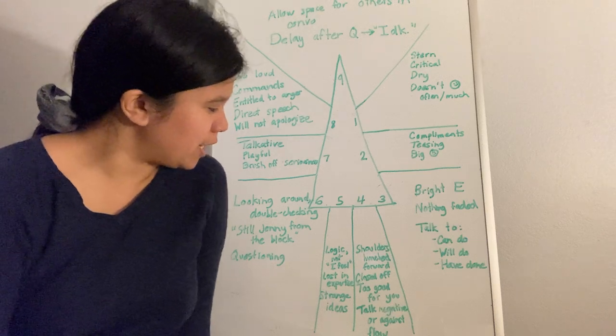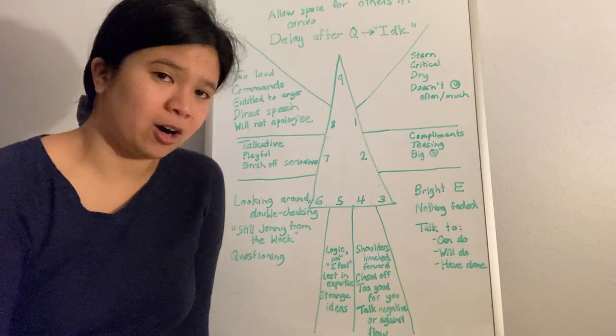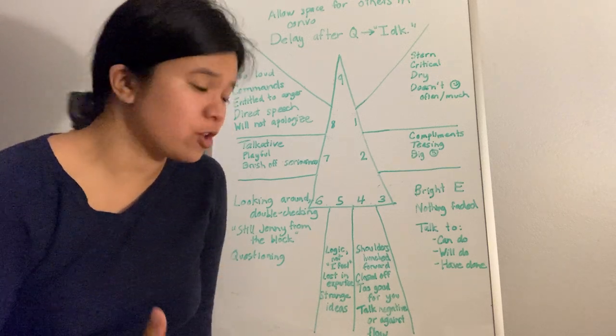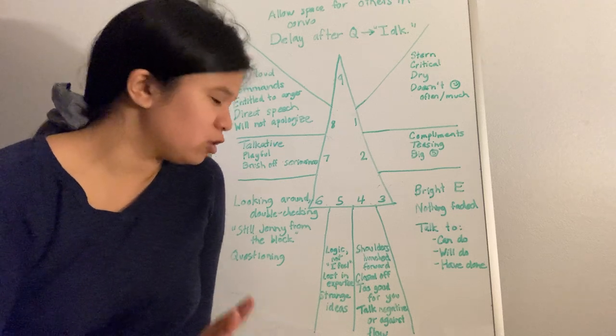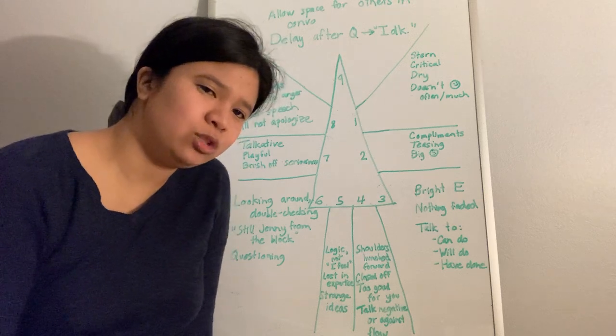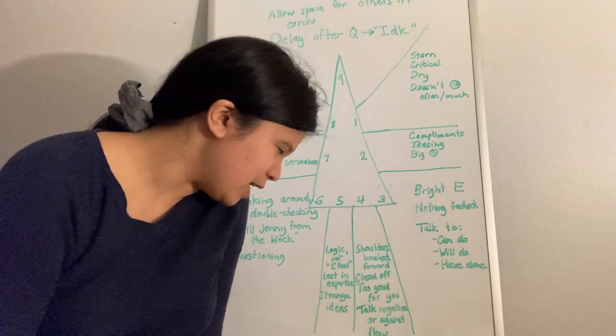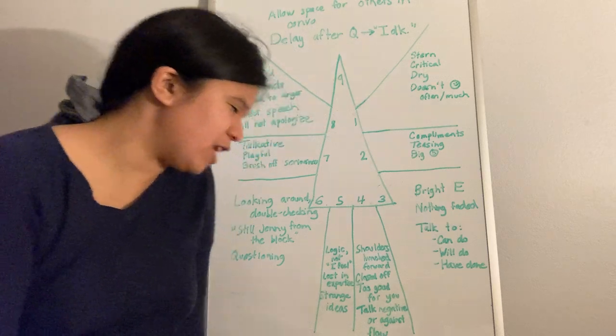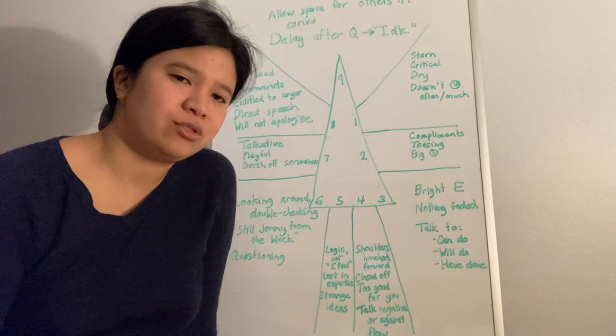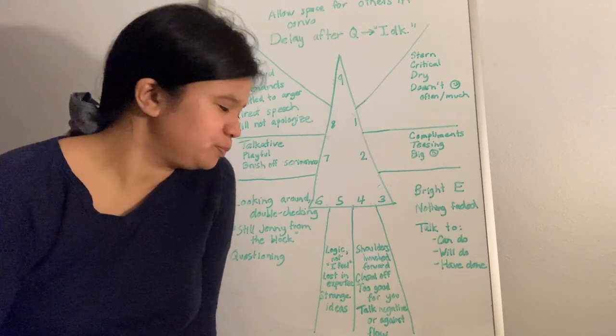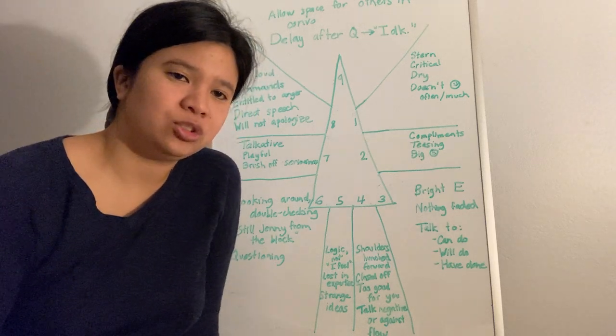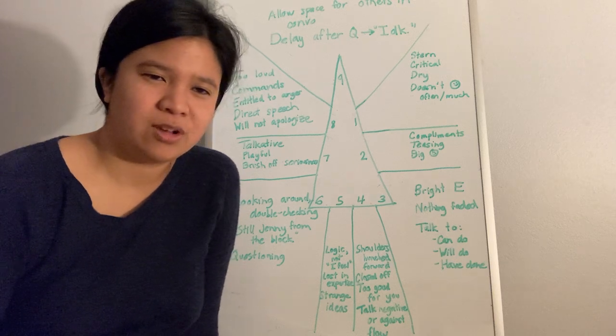The last type in the heart triad is type 4. Type 4 signals: typically they have their shoulders hunched over, they are closed off from people. They have a vibe that they are too good for you, being arrogant. And they have a tendency to bring the topic to a negative topic in conversation, or even speak in opposition to what the interviewer is bringing up.